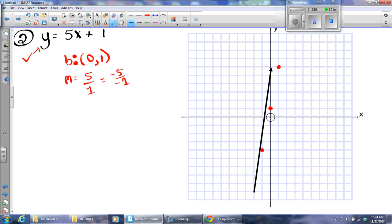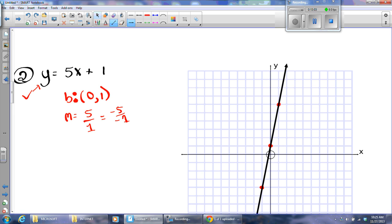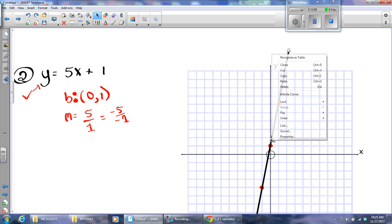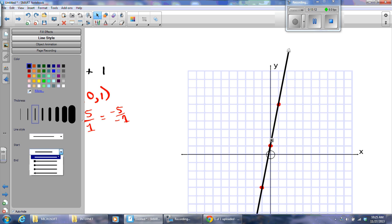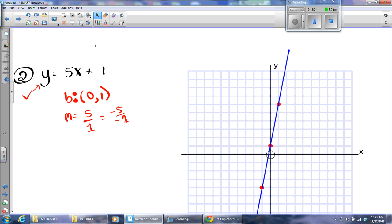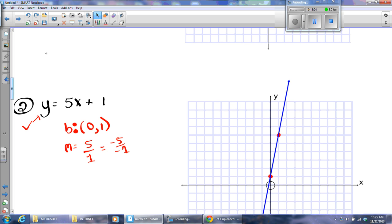By the way, if I were going to do that guesstimate I was talking about, up one, two, three, four, five, and then over one like that, I'd still be on the line.